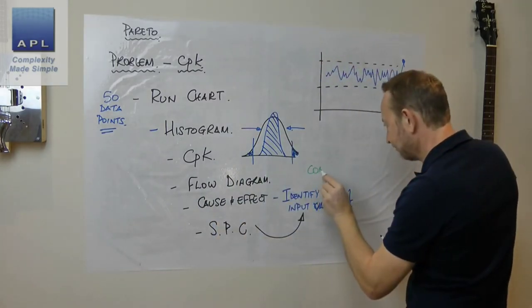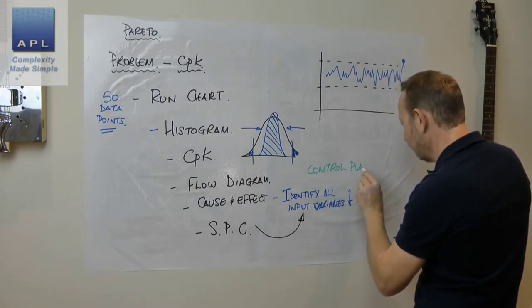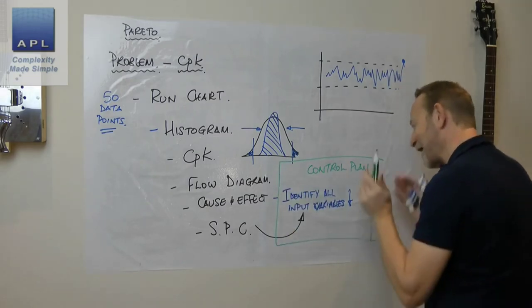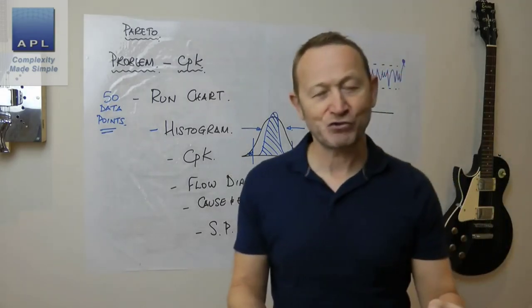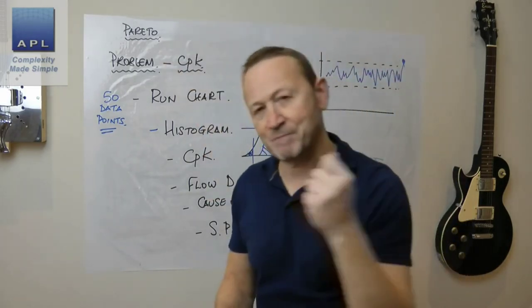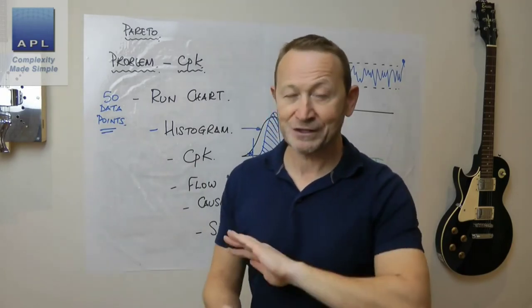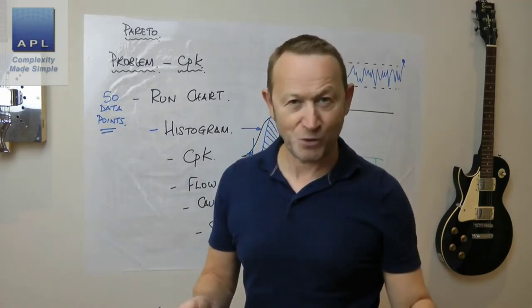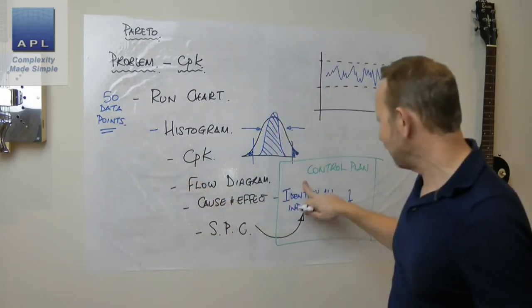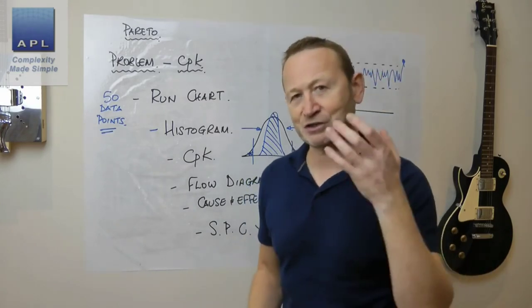When you did the cause and effect diagram, by the way, you should have done all of this at new product introduction. What you're doing here is tidying up a mess you created because you implemented a new product in a half-arsed way. If you'd done an FMEA properly in the first place, the FMEA would have generated the control plan and you wouldn't be doing this project.